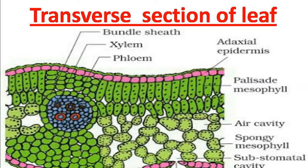Welcome to Rubina's lecture. In this video we will be discussing the transverse section of leaf, from lesson number one: nutritional food supply system. We will discuss the different tissues present in the structure of a leaf. The tissues include upper epidermis, also known as adaxial epidermis, and lower epidermis, also known as abaxial epidermis. Upper epidermis consists of palisade mesophyll tissue and lower epidermis consists of spongy mesophyll tissue, which has more intercellular spaces. It also consists of conducting bundle sheath — xylem and phloem.